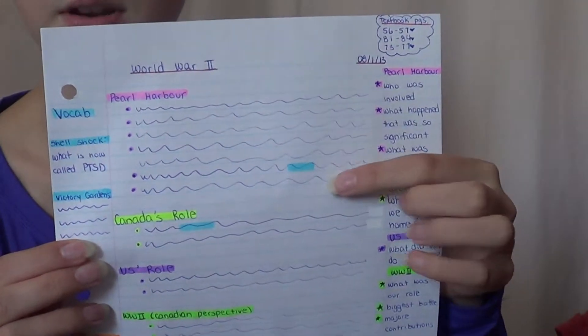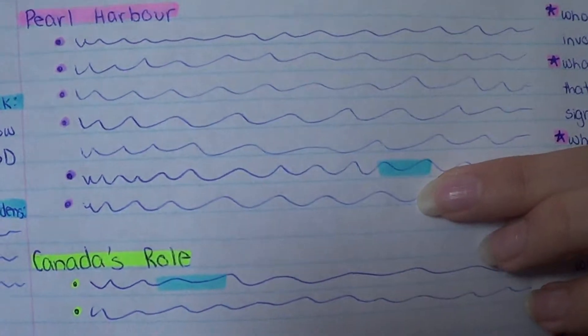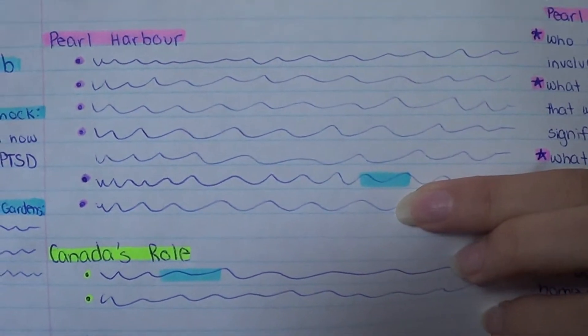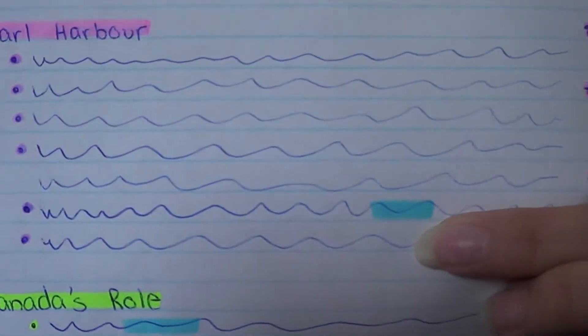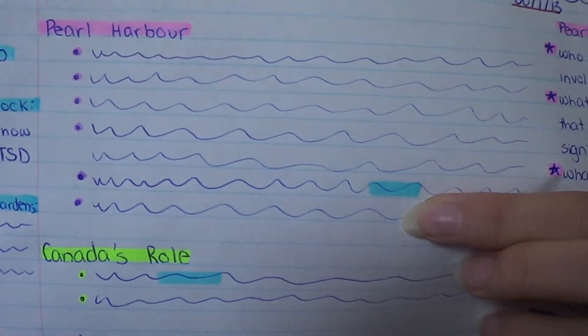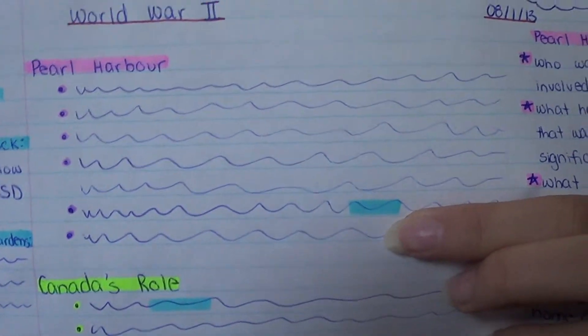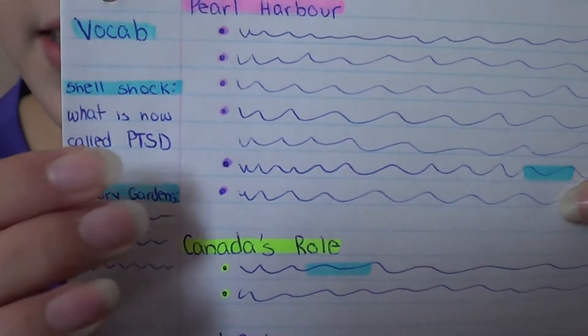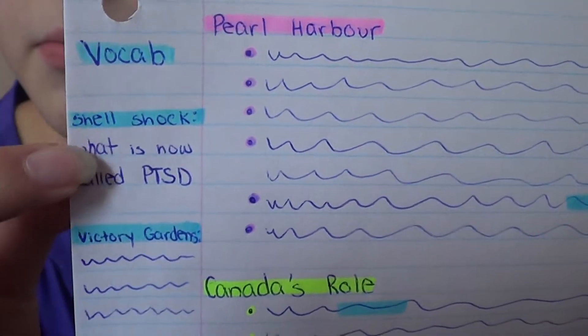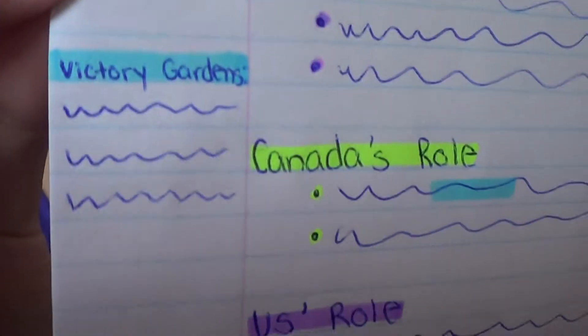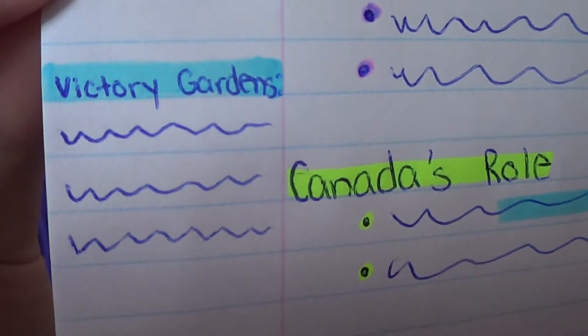Now you can see here, for example, I have this little bit highlighted in blue. If I have a vocab word that I don't know, I would pick a color — for this note I used blue — and I would highlight that word. Then over in the margin I would write 'vocab', highlight it in blue, and then write whatever the vocab word is with the definition underneath. This helps make sure your notes are nice and clear, and there's no need to go and clarify one single word over and over again because you have the definition right in your notes.